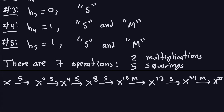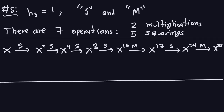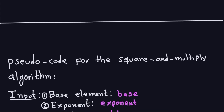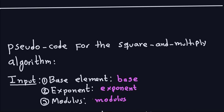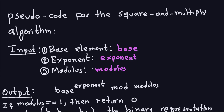Now let's look at the pseudocode for the square-and-multiply algorithm. The input for this algorithm is basically three numbers. The base element, which I'll call variable 'base'; the exponent, which I'll call 'exponent'; and the modulus, which I'll call 'modulus'. The reason I'm using these long names is that when we write our program, it's better to give meaningful names to variables. The output would be base to the exponent modulo the modulus.